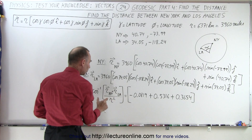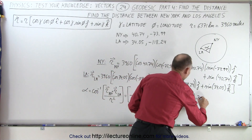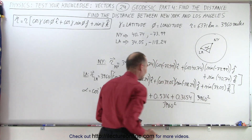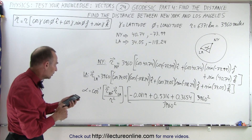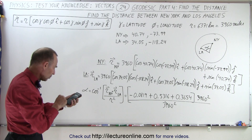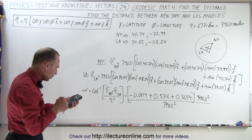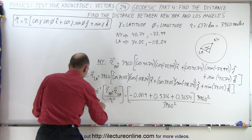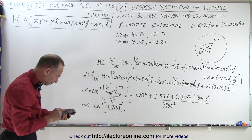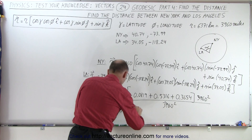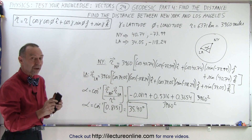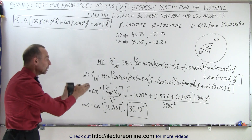That's the dot product of the two position vectors. The 3,960 squared factors cancel out. So the angle alpha equals the inverse cosine of minus 0.0819 plus 0.5316 plus 0.3654, which equals the inverse cosine of 0.8151. Taking the arccos gives 35.40 degrees. So the angle between the two position vectors from the center of the Earth — one to New York, one to LA — is 35.40 degrees.